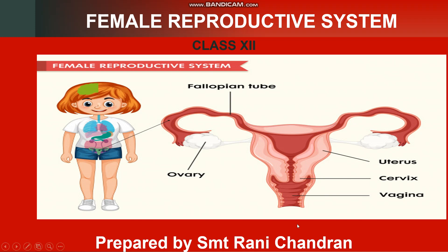The female reproductive system consists of a pair of ovaries — just as the male reproductive system has a pair of testes. The accessory ducts in the female reproductive system include the oviduct or fallopian tube, uterus, cervix, and vagina. Then there is the external genitalia. So these are the parts of the female reproductive system: a pair of ovaries, the fallopian tube, uterus, cervix, vagina, and external genitalia.